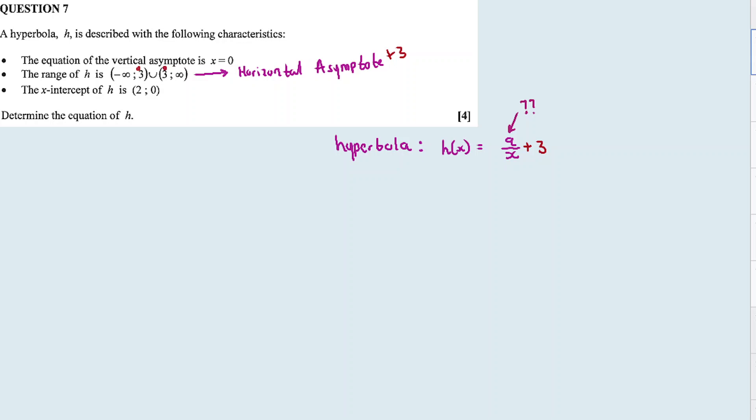We calculate it using this point, 2 and 0. Then we substitute into the equation, y is zero, x is two. Then we transpose the minus 3 and multiply both sides of the equation by 2.